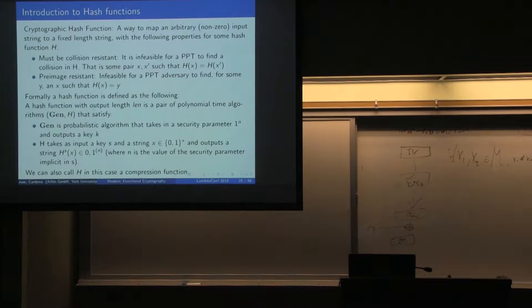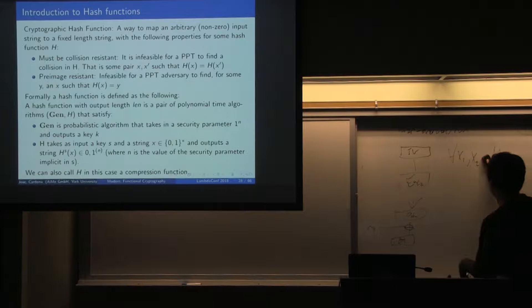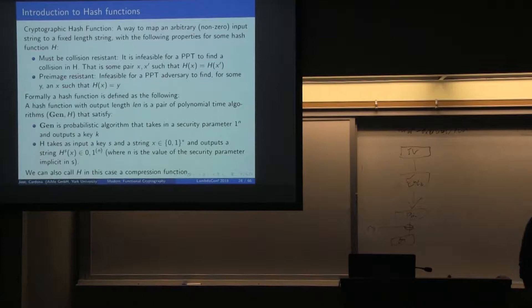We technically cannot achieve that in reality because hash functions are finite — your domain is going to be much larger than your range, so some things are going to map to the same output. That is called a collision. What we actually want is that finding two inputs x1 and x2 such that their hash is equivalent is computationally hard. That is the basis of a one-way function, and that is collision resistance.